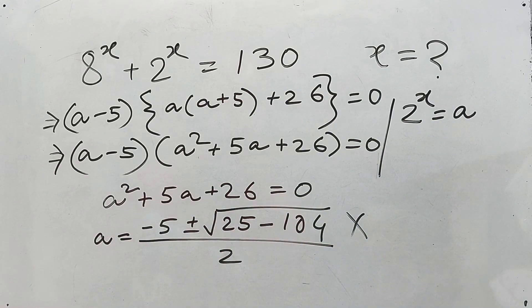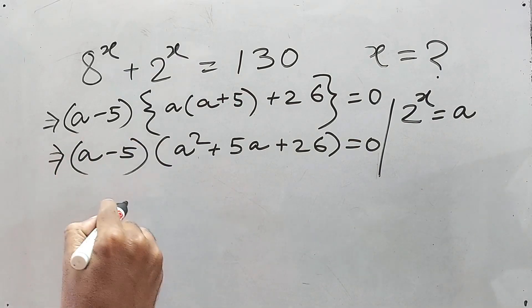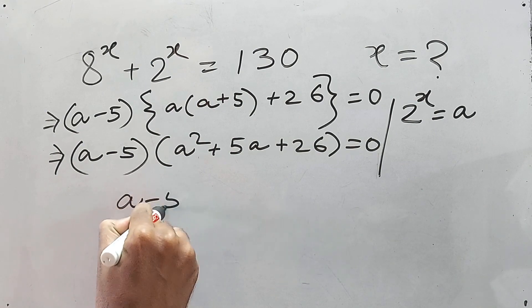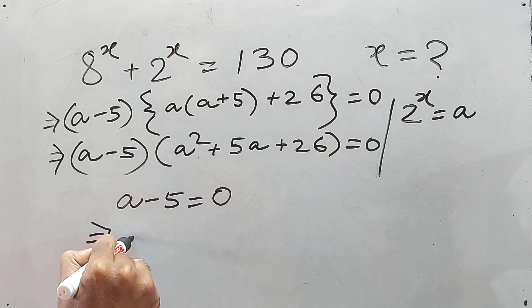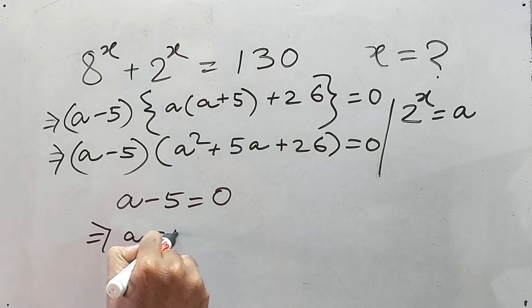So we are not taking this. So what will be the next one? Another one, that is a minus 5 is equal to 0. This implies a is equal to 5.